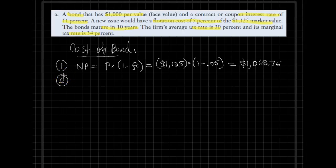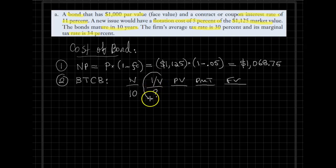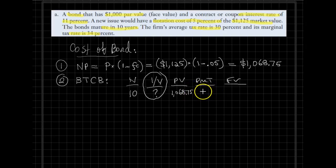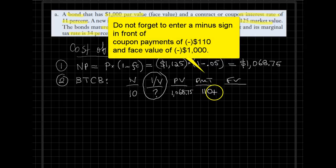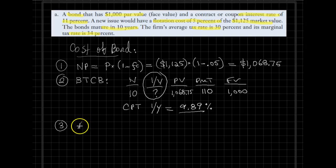For the second part, we calculate the before-tax cost of capital — in this case, the bond — using our financial calculator. This is a 10-year bond. The net price is $1,068.75, the coupon rate is 11%, coupons are paid annually, so 11% of $1,000 gives us $110, and the face value is $1,000. Computing I/Y yields an answer of 9.89% before-tax cost of the bond.